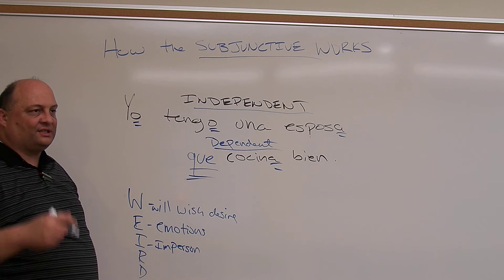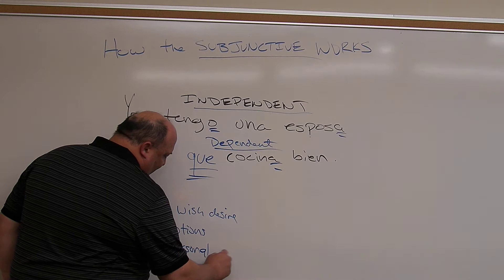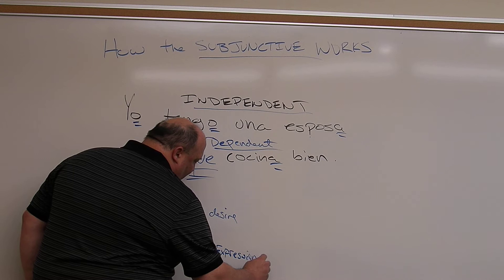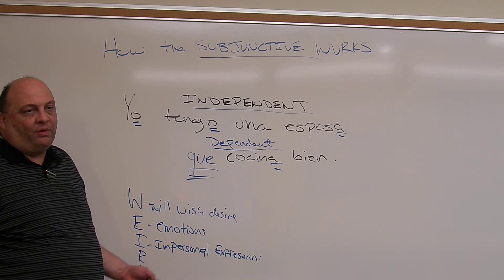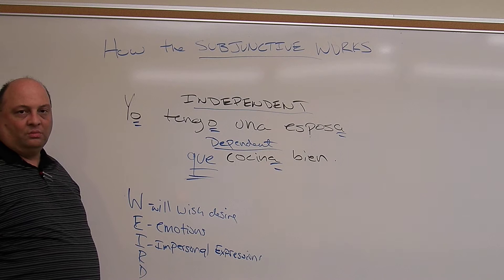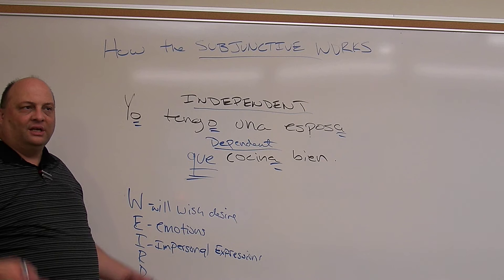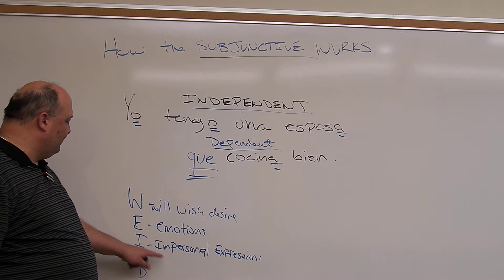The subject of impersonal expressions is 'it,' and we don't have a pronoun that expresses 'it' as a subject in Spanish. 'Lo' only works as a direct object, so we can't use it. When the subject is 'it,' we don't use a pronoun or a noun — we just conjugate the verb. Es bueno, es malo, llueve, nieva — 'it snows,' 'it's rainy' — está nevando, está lloviendo. The subject is 'it'; we can't put 'lo' in front of that.